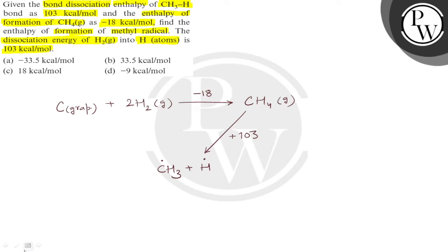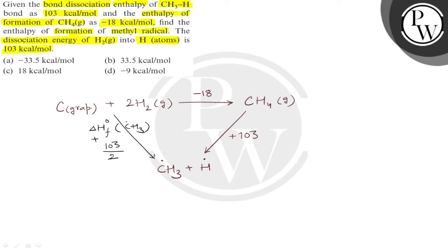Now this reaction — this is the reaction in which CH3 free radical and H free radical both are being formed. So, what should be delta H for this process? Delta H for this process is delta H0 formation of CH3 free radical plus delta H0 formation of H atom. एक H atom बना है। H2 molecule जब dissociate होता है तो दो H atom बनते हैं, इसलिए यहाँ पर जो energy involved है वो है 103 divided by 2 kilocalorie।